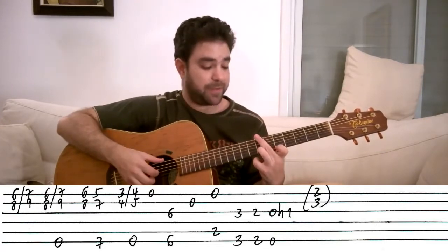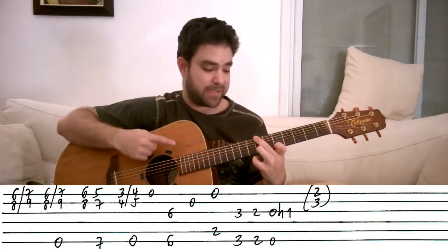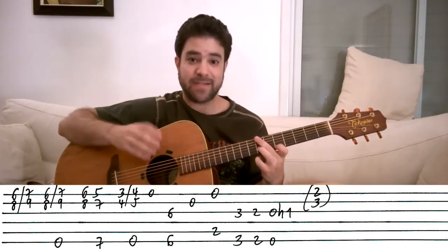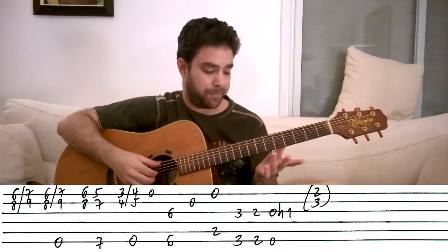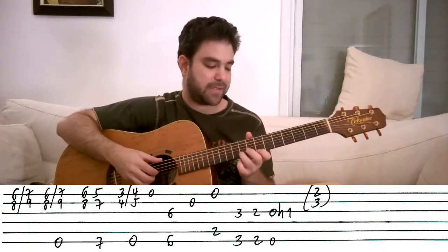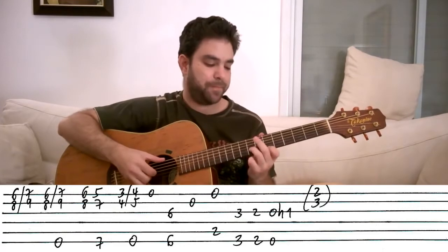7 but you play 7 on the 6th string, because this is a B note and B is the 5th of the E chord. So we want to have a walking bass line. Okay, so E,